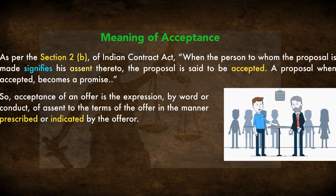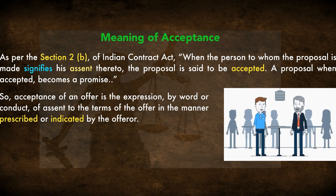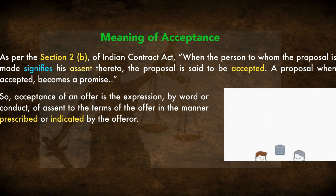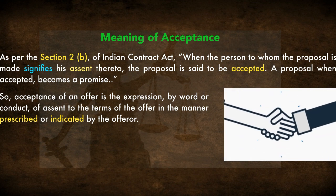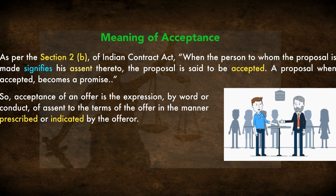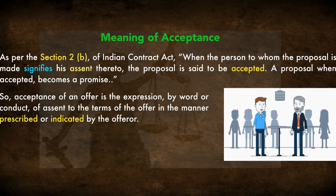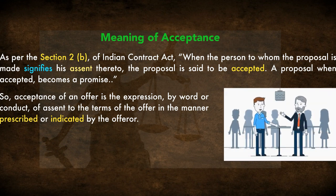Keep in mind: the assent must be to the terms of the offer in the manner prescribed or indicated by the offerer. If the offerer has set certain terms and conditions, it's not enough to simply say yes — you have to also accept those terms and conditions, or else it won't be a valid acceptance.